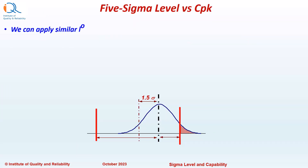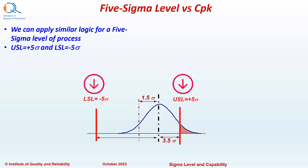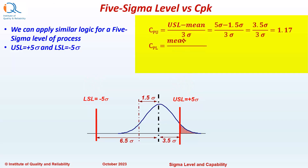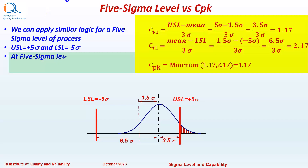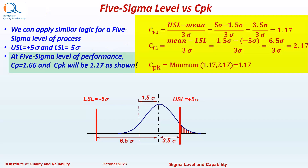We can apply similar logic for a 5 Sigma Level process. USL will now be plus 5 Sigma and LSL will be minus 5 Sigma. If we perform the CPK calculation, we can easily see that CPK equals 1.17. Therefore, at 5 Sigma level of performance, CP equals 1.67 and CPK will be 1.17.